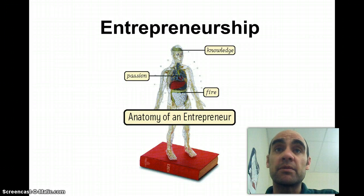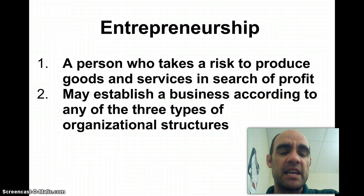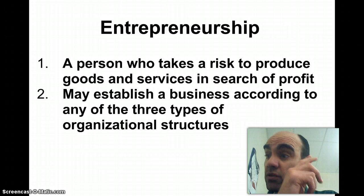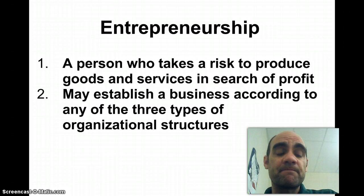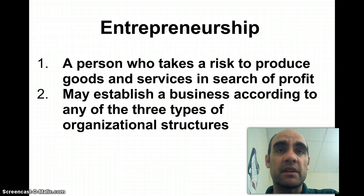The last thing we looked at was an entrepreneur. This is a person who takes the risk to produce goods and services. Examples I always use include H.J. Heinz — he didn't invent ketchup, but he did start Heinz Corporation. We also talked to some students in class whose parents were entrepreneurs who own their own companies. So those are the different types of business ownership.